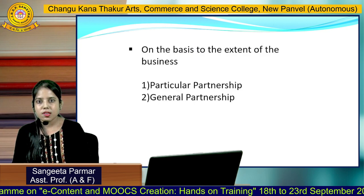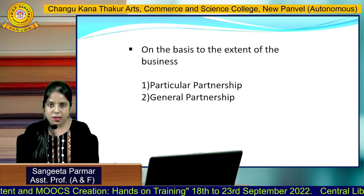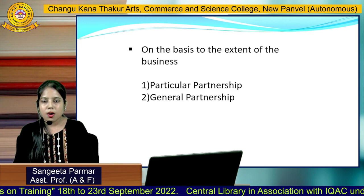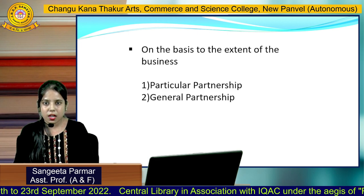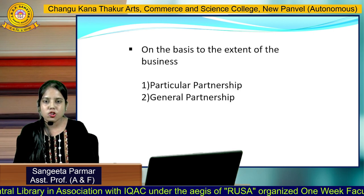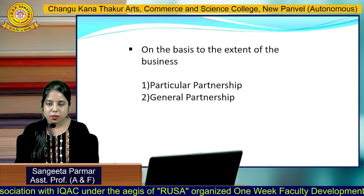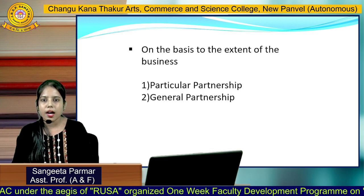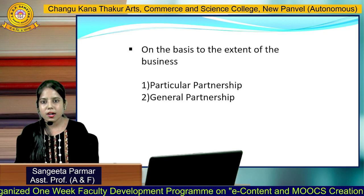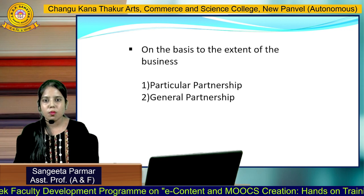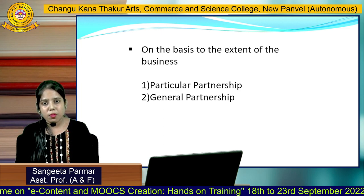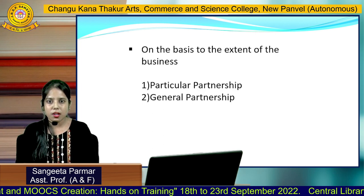The second category is on the basis of the extent of business. Particular partnership is when a person becomes a partner with others for a particular undertaking or adventure — to complete a particular task — and after the completion of that task the partnership comes to an end. General partnership is a normal business arrangement formed by two or more persons, where all partners are personally liable and responsible for the acts of the business.